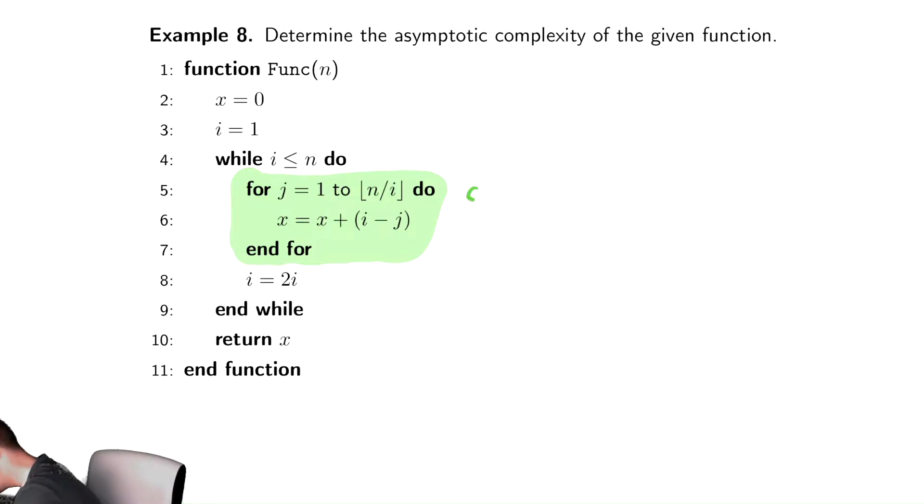This takes cn over i time. We ignore the floor function, the inside takes constant time, we take the number of iterations, which is n divided by i, and multiply it by c. All works out relatively okay.